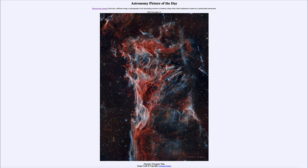What we see here is actually a portion of the Veil Nebula, which is part of a supernova remnant. A supernova can occur at the end of the life of a star when a star explodes and expels material out into space, and it will continue to expand.